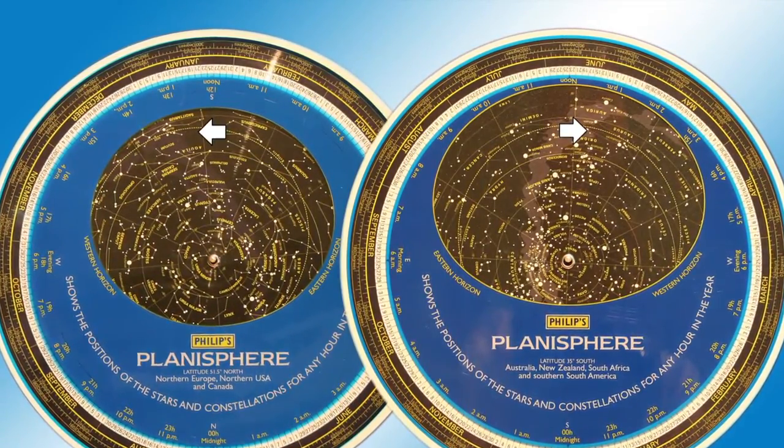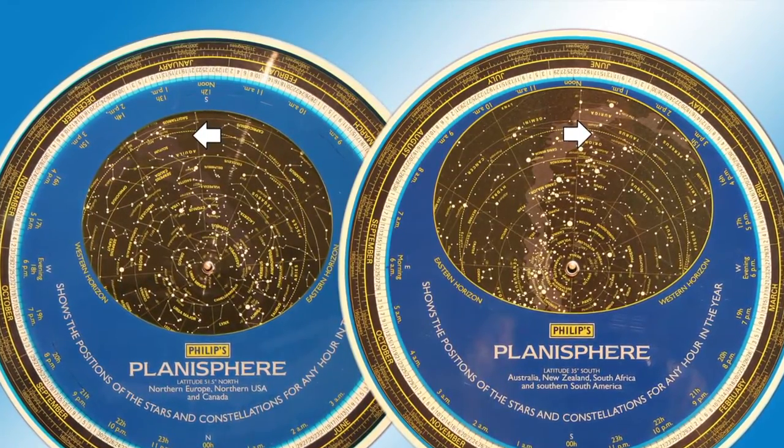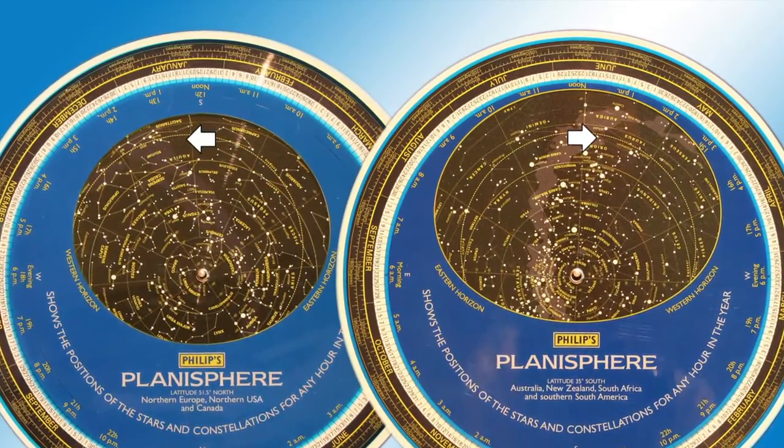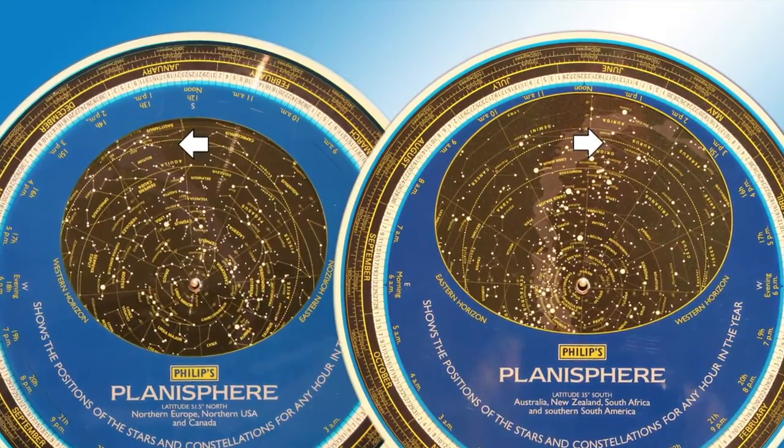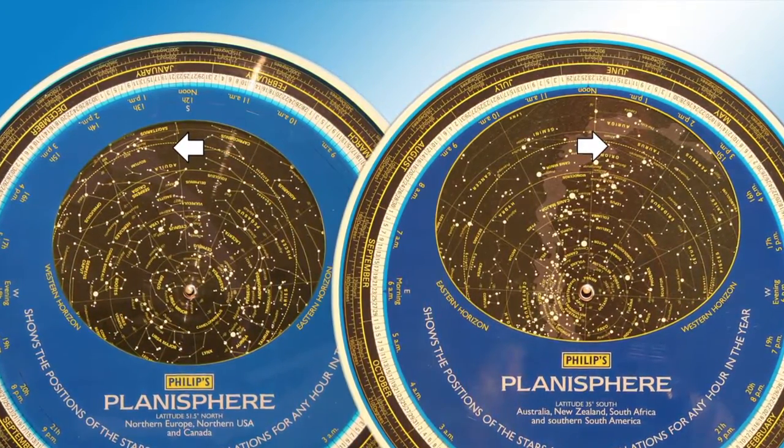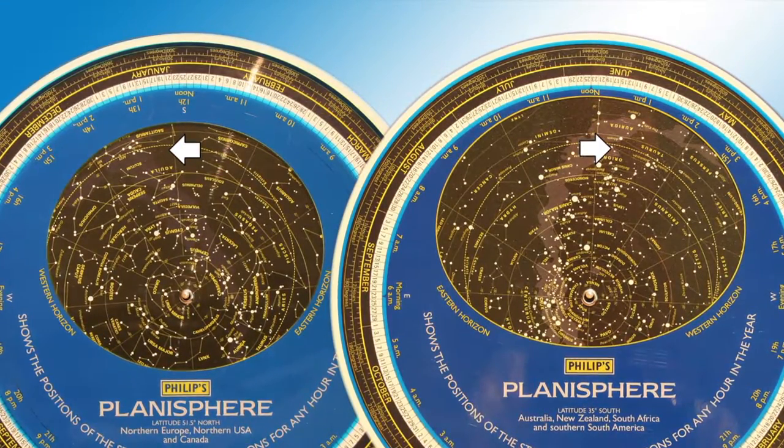And the way it's been done is they seem to have flipped the map around. On the Northern Hemisphere, you've got the North Pole or the North Celestial Pole in the middle. On the Southern Hemisphere, you've got the perceived South Celestial Pole in the middle. Well, of course the stars are going to go in the opposite direction. You're looking in the opposite direction.